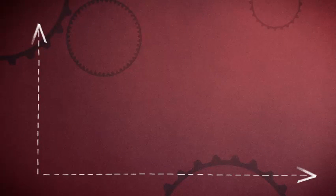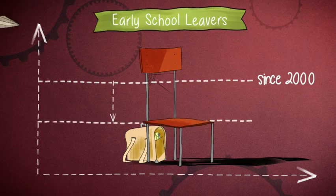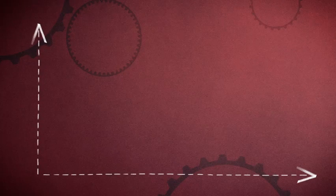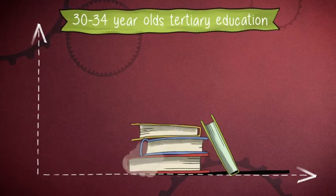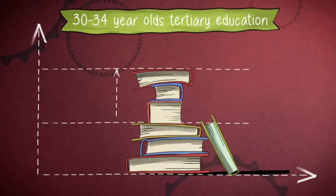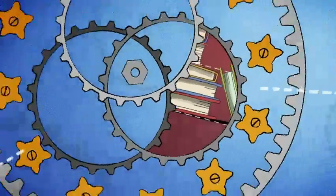The number of early leavers from education and training has fallen continuously since 2000, to reach 11.1% in 2014. At the same time, the number of people aged between 30 and 34 with tertiary education has constantly increased, reaching 37.9% in 2014.